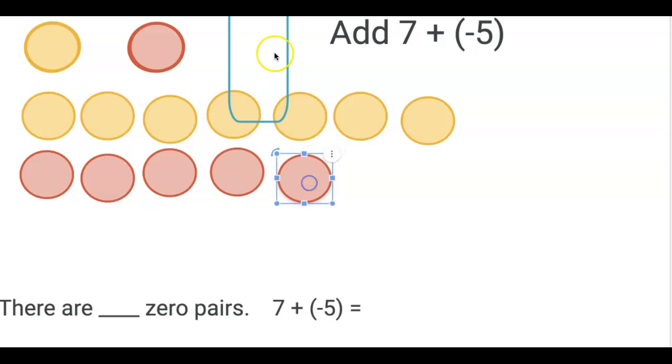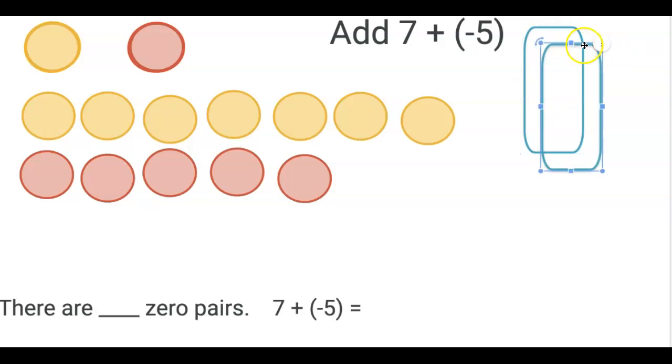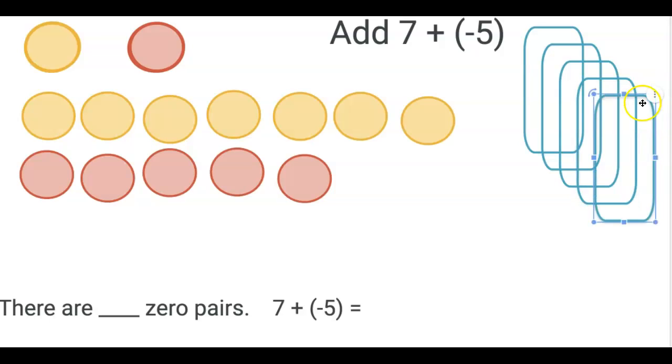And then they need to add the bracket for zero pairs. Oops, I thought I made multiples of that. So I'm going to need to fix that on the Jamboard so when you open it, you will have multiples of it and they won't have to create their own.